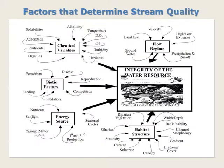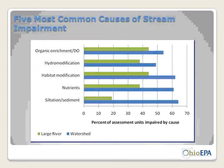This is a busy slide, but it gives you an idea of all the different criteria and factors involved in determining chemical variables, flow regime, biotic factors, energy source, habitat structure, and so on — and how all of these features are put together to determine whether a water is reaching the principal goal of the Clean Water Act.